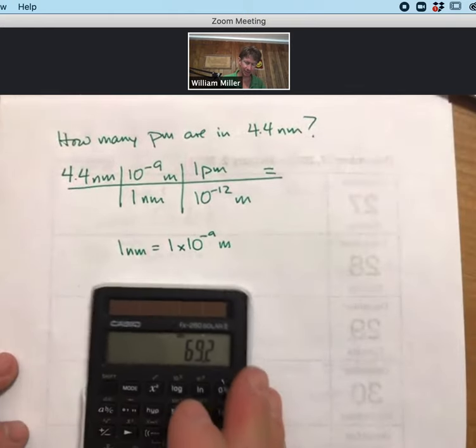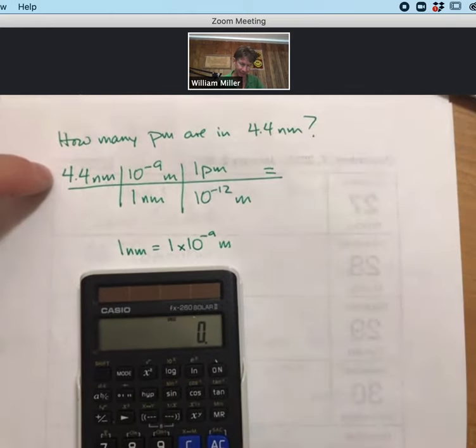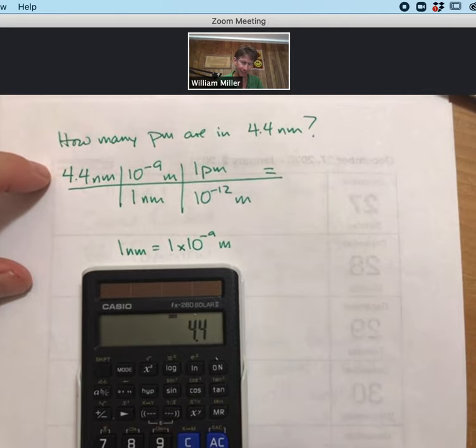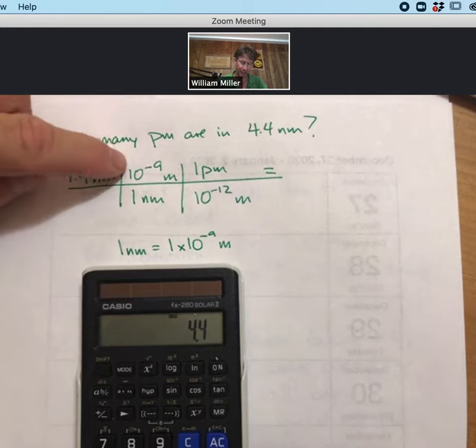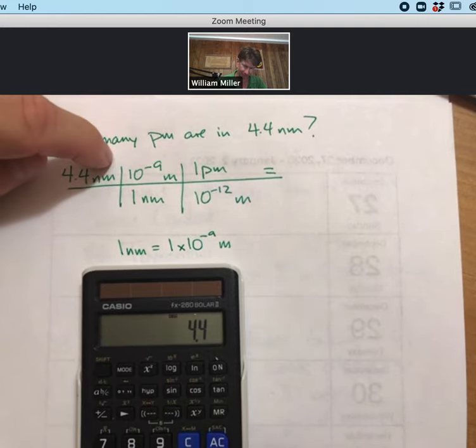Now multiplying this out, we can see that 4.4. And here's a tricky part. This is my old-fashioned calculator. The way that I have to enter in 10 to the minus 9 is, I have to enter in, so I'm going to do times first.